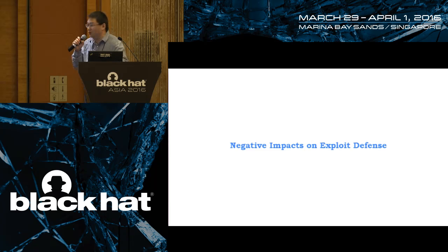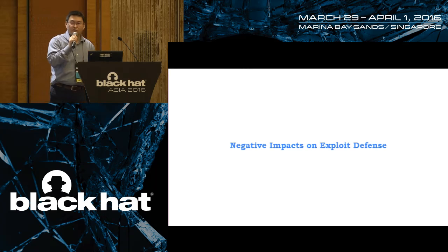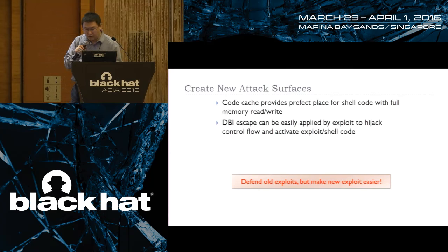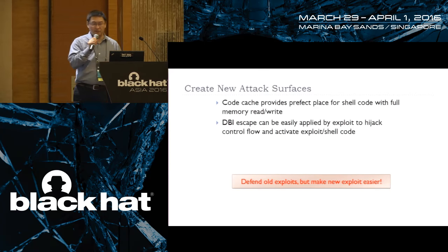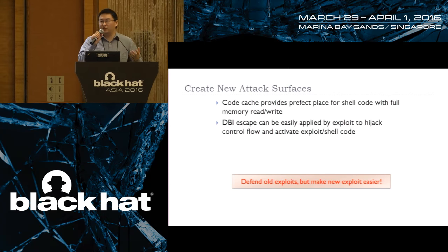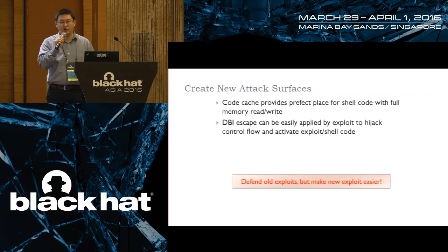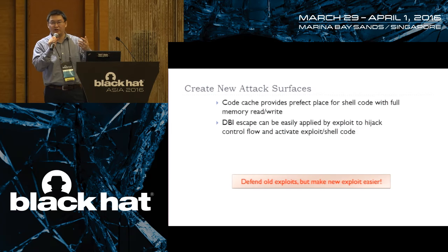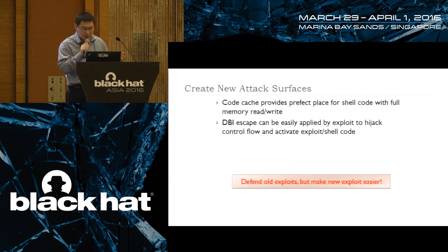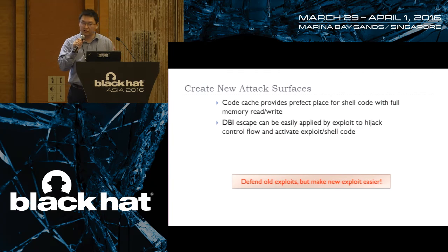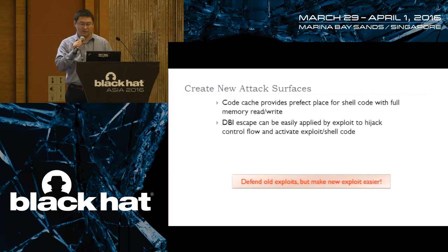This is the demo for the escape part. Our conclusion is: if you use DBI to do exploit defense today, it will stop some attacks, but it introduces new attack surfaces. For example, the large, writable code cache memory — people can easily put shellcode there and use the DBI escape to execute it undetected. So while DBI can defend against old exploits, it simultaneously makes new exploits very easy by providing a writable-executable buffer, which we've been trying to eliminate for many years.